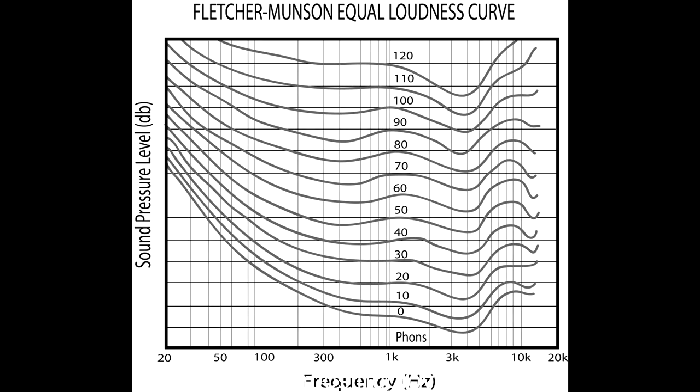But that's not the end of it. We don't hear all frequencies equally either — in fact, we hear non-linearly. Fletcher and Munson famously proved this by playing tones generated at the precise same volume to participants and asking them if tone A was louder than tone B. The results are known as the Fletcher-Munson curve. What they showed is that our perception of frequency becomes more linear as frequencies get louder.